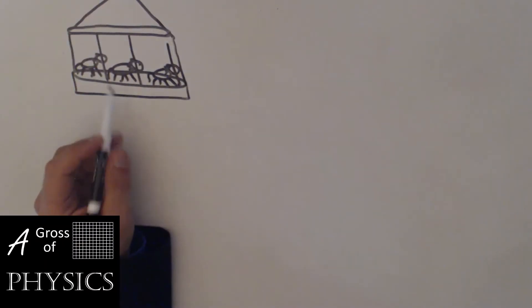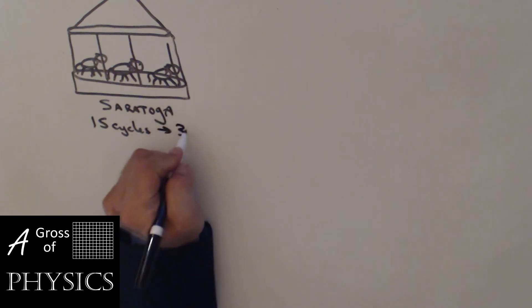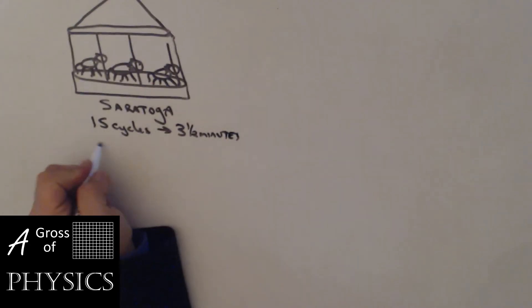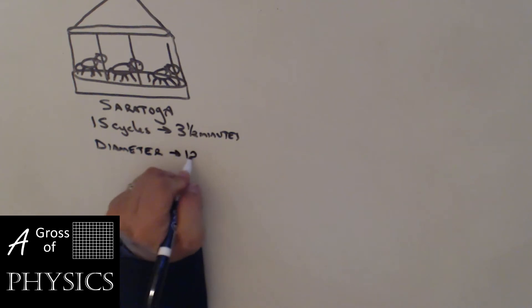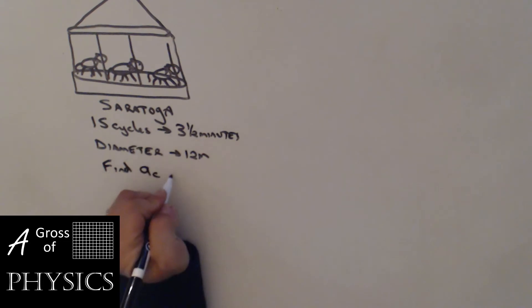Now that you can see this beautiful rendition of a carousel, we can solve our next problem. What we have is the Saratoga carousel and it's going to make 15 cycles during the entire trip which is three and a half minutes. The diameter is 12 meters. We want to find two things: find the centripetal acceleration and the speed of the riders.